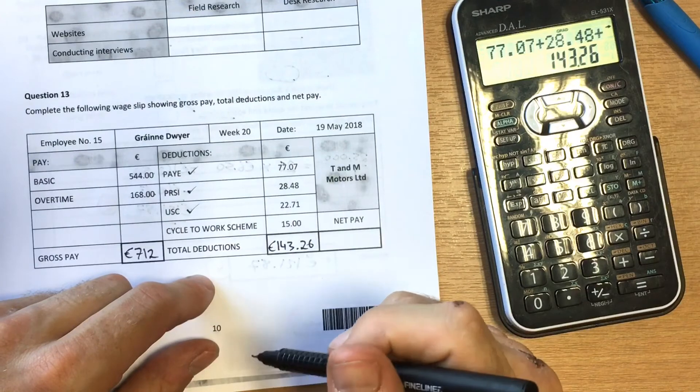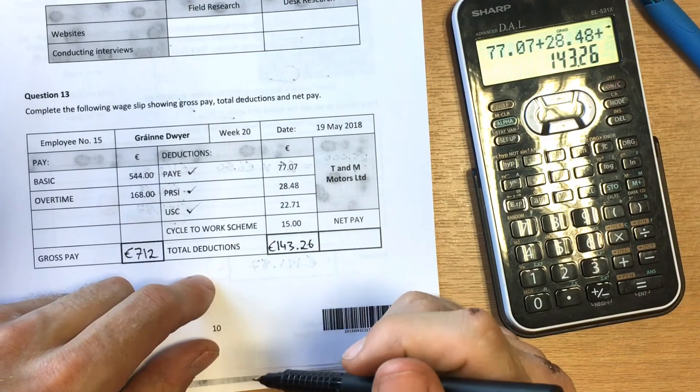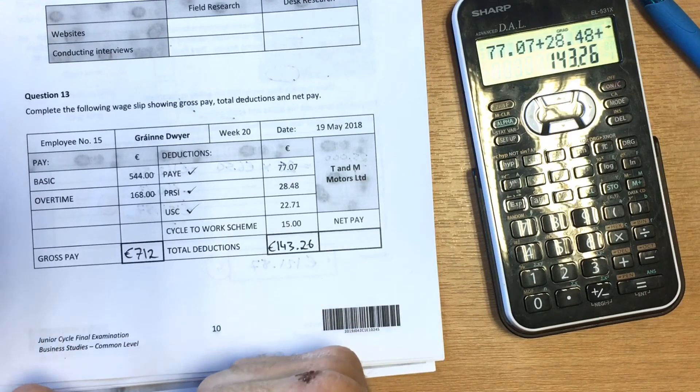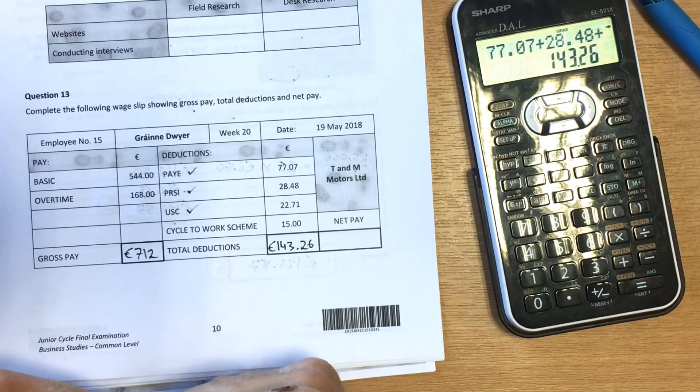The cycle to work scheme was introduced by the Irish government a number of years ago to improve the health of our nation. They were trying to give incentives to employees to buy bikes and cycle to work in order to stay healthy, which in the long term will cut down the health bill for the Irish government. That's the idea behind that.